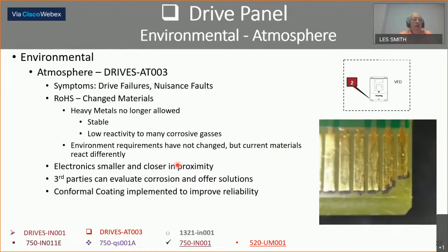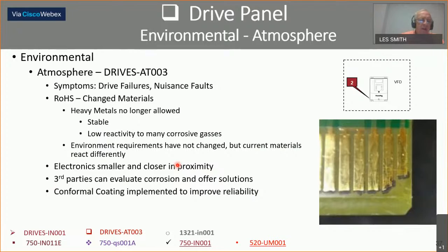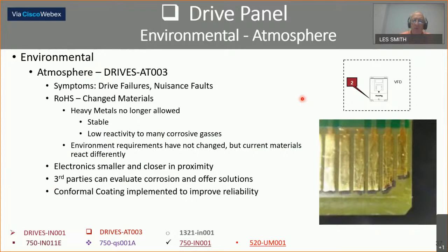Regarding the environment: symptoms of drive failure are nuisance faults. ROHS — R-O-H-S — has changed the materials in drives; they've taken heavy materials out. When they removed the heavy metal, the drives are not as hearty in harsh environments. We now have smaller circuits and conformal coating, but these drives won't stand up as well as older drives — and that's not just one brand, that's all brands. The circuitry has gotten much finer. So be aware of that: keep them cool, keep them away from contaminants. Protect the cooling fans and do not expose to corrosive atmospheres — this statement appears in both the 520 and competitor's drives. Keep the drive's environment friendly to the drive.